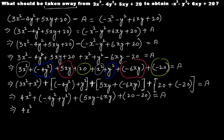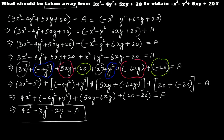So A equals 4x squared minus 3y squared minus xy. This is the algebraic expression which when subtracted from 3x squared minus 4y squared plus 5xy plus 20, gives minus x squared minus y squared plus 6xy plus 20.